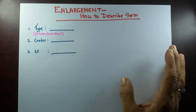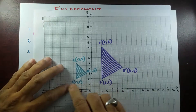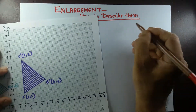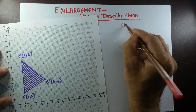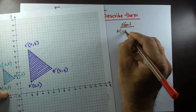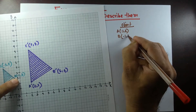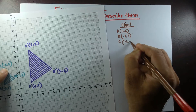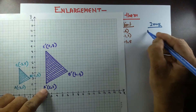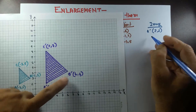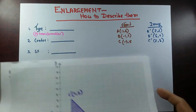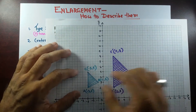Let's look at the first case. Triangle ABC is the object and A'B'C' is the image. The object has coordinates: A is (−3, 2), B is (−1, 3), and C is (−3, 5). The image has coordinates: A' is (2, 2), B' is (6, 4), and C' is (2, 8).